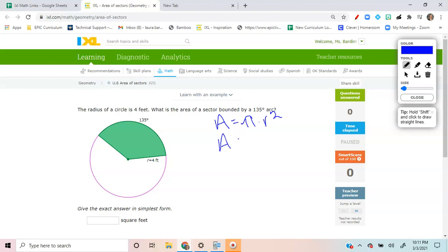So therefore, area is going to be equal to pi times 4 squared. 4 squared is equal to 16 pi.